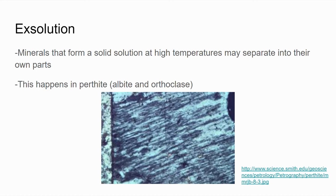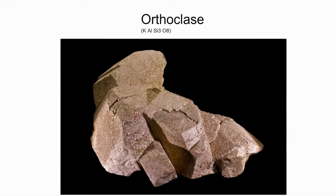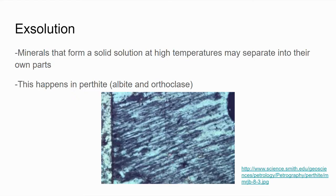Moving on, we should talk about exsolution. This happens pretty often with the feldspar group. Minerals that form a solid solution and fit together in a crystal structure at high temperatures may separate into their own distinct minerals at lower temperatures. A great example of this is perthite, which is made up of albite and orthoclase. When we look at a thin section of perthite, we can see it has separate parts — albite and orthoclase. That separation is called exsolution.